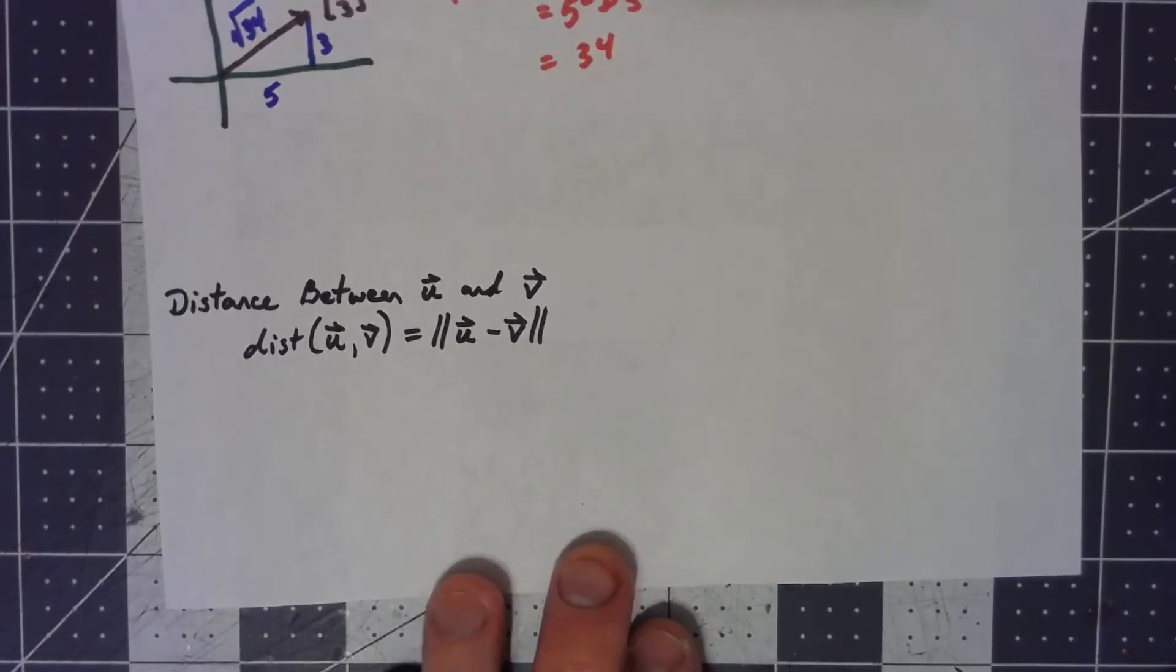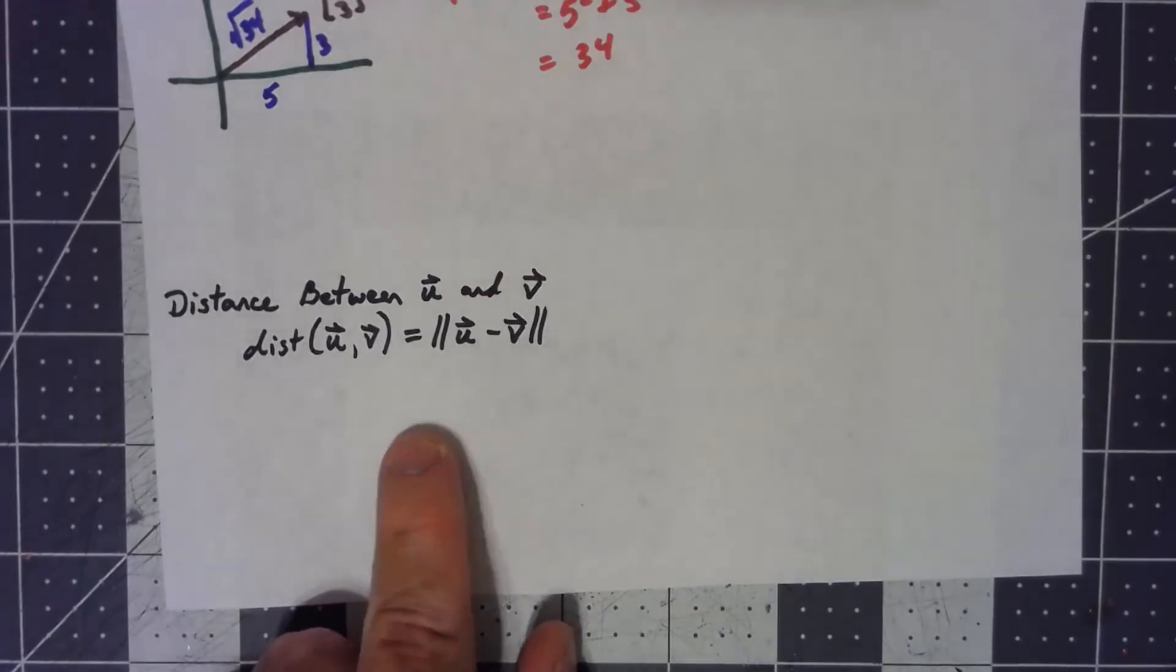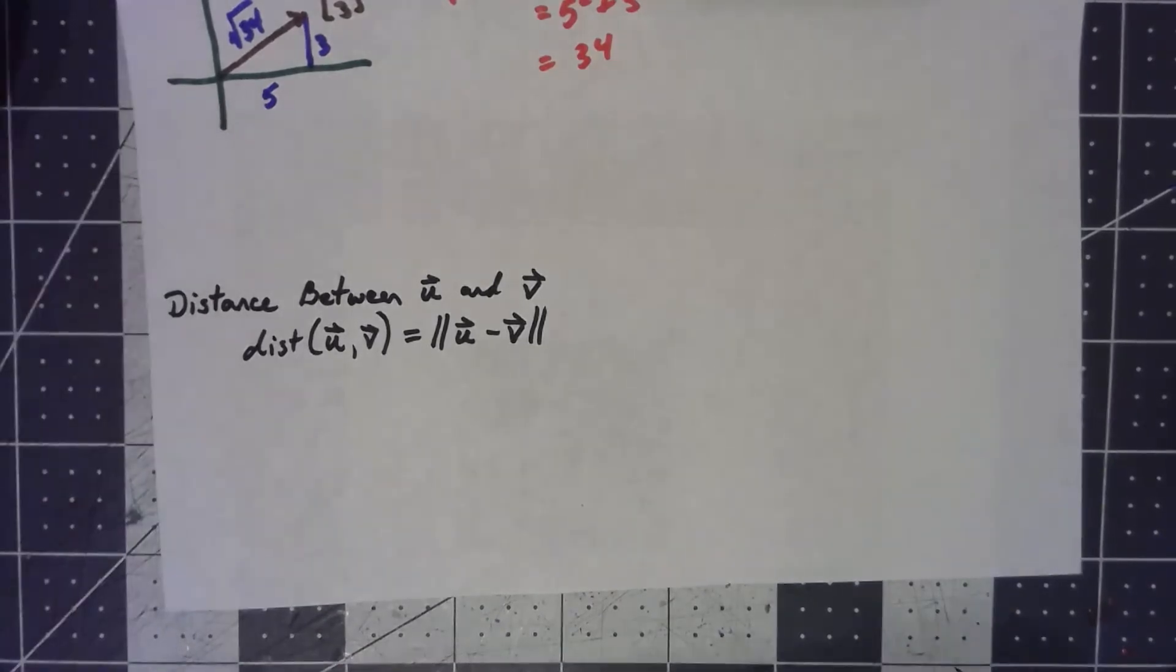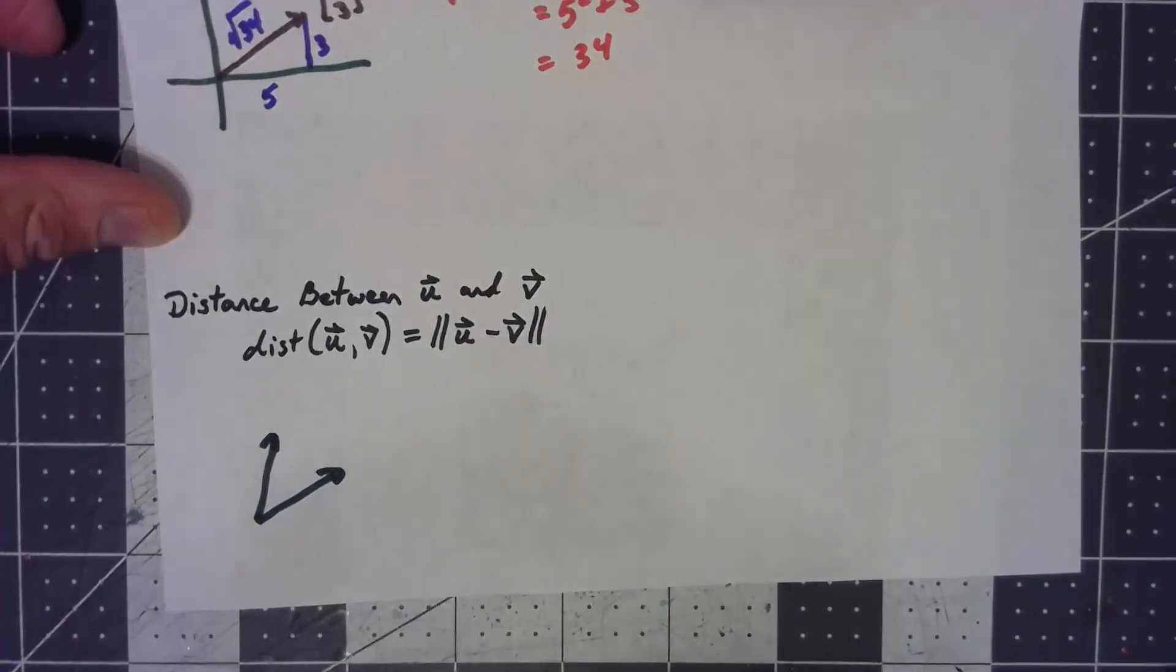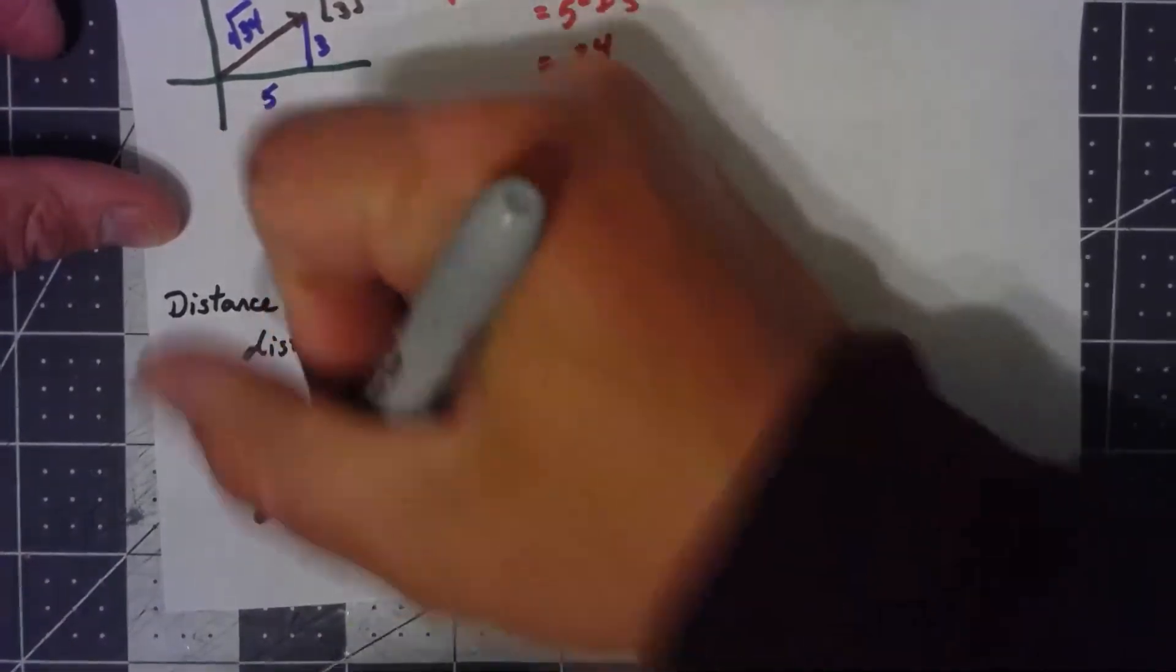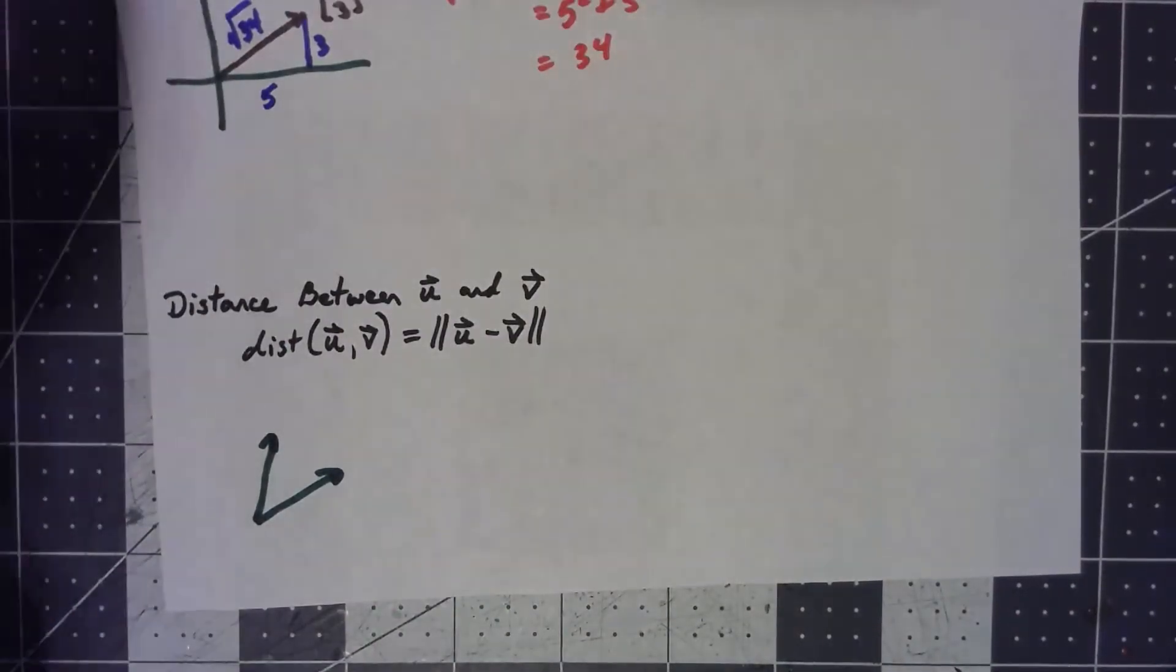Along those lines, then, we can say that the distance between u and v, again, let's kind of draw a picture here, if I've got a vector u and I've got a vector v, u minus v is a vector here.